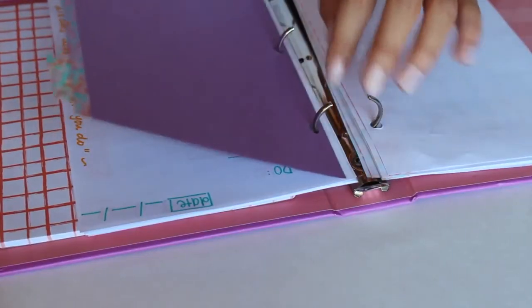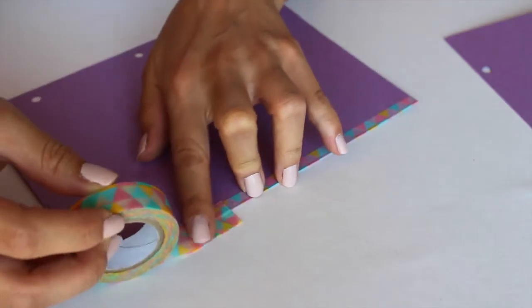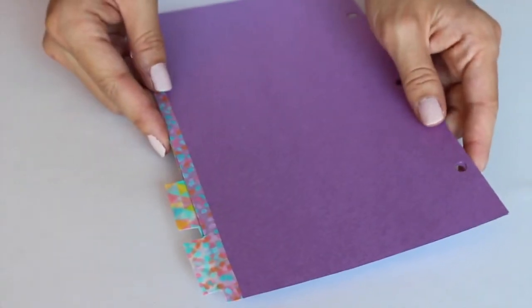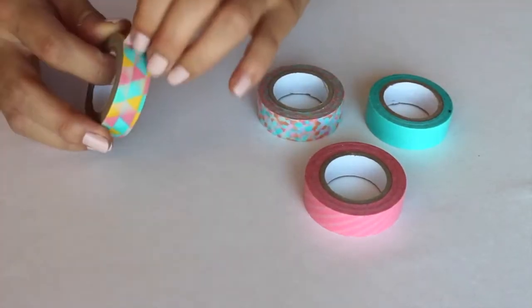I just repeated that with the other washi tape color and they look super cute. They stick out enough that they can be found, but they don't stick out of the binder when I close it.